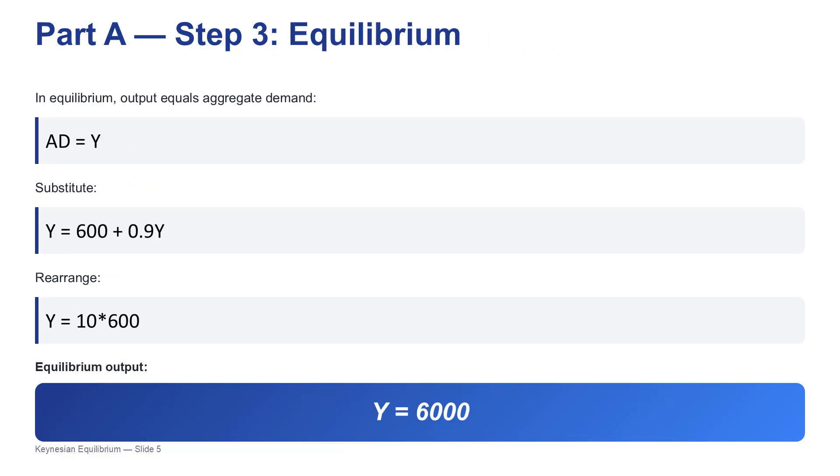That 600 represents all the spending that happens regardless of the current income level. It's the baseline injection of spending into the economy. Okay. So now for the big moment. We solve for equilibrium by setting output equal to aggregate demand. Y equals AD. So Y equals 600 plus 0.9Y. And to solve that, we just need to get the Y terms together. Subtract 0.9Y from both sides. And we're left with 0.1Y equals 600. So to get Y, we divide 600 by 0.1. Which means our equilibrium output Y is 6,000. 6,000 million shekels. That's where the economy is currently settled.